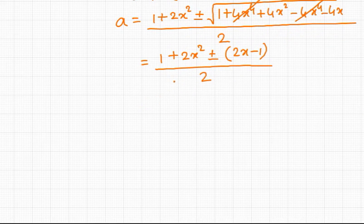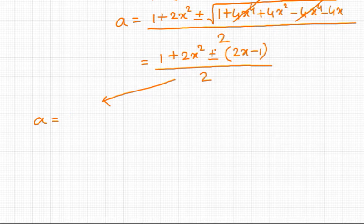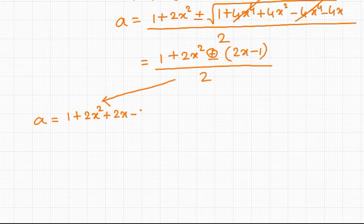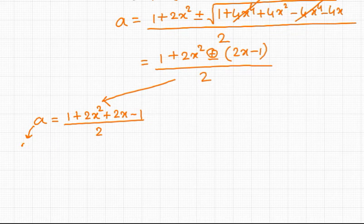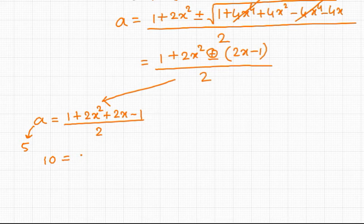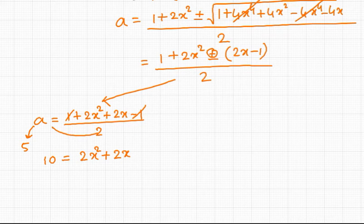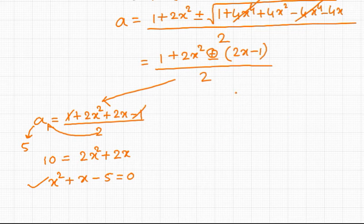We are getting two possible values of a. Considering the positive sign, a equals (1 plus 2x squared plus 2x minus 1) divided by 2. Now substituting back 5 in place of a and simplifying, we get 10 equal to 2x squared plus 2x, which gives us the quadratic equation: x squared plus x minus 5 equals 0. This is one quadratic equation in terms of x.